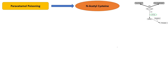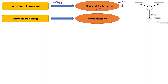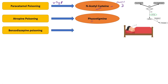For paracetamol poisoning, the drug of choice is N-acetyl cysteine. This is very important. N-acetyl cysteine is also a mucolytic agent. For atropine poisoning, the drug of choice is physostigmine — physostigmine is used in the treatment of atropine poisoning.